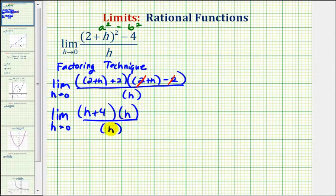Notice how the numerator and denominator share a common factor of h, which means this graph would have a hole at h equals zero, which does not affect the limit. So this limit is equal to the limit as h approaches zero of h plus four.